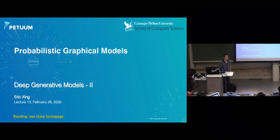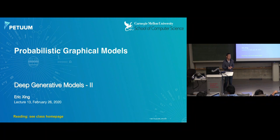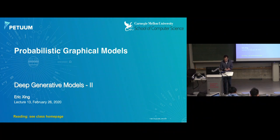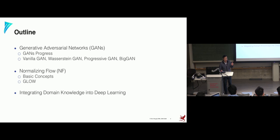Let's continue the discussion on deep generative models. Last time I gave you an overarching view about the statistical and mathematical foundation of a couple of deep generative models, especially embedding them in the history of graphical models, variational inferences, and all that. Today's lecture will be a little more pragmatic — I will talk about a few tricks and new ideas people bring in to further empower this approach.